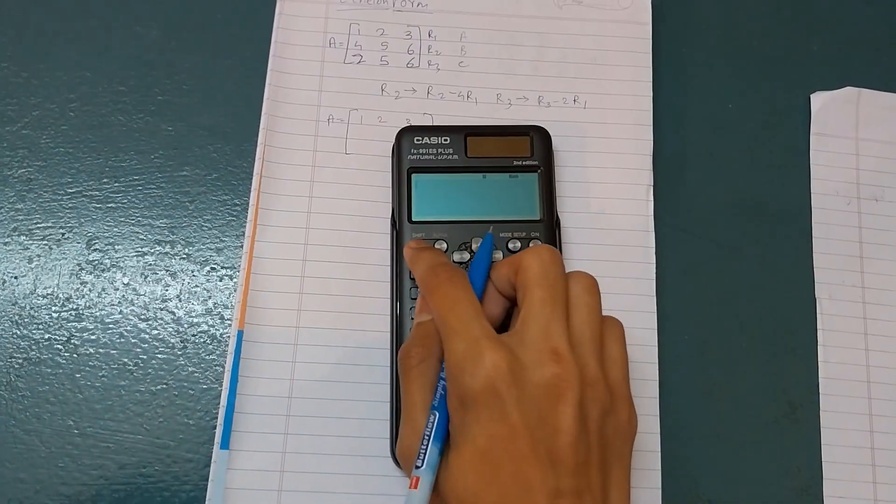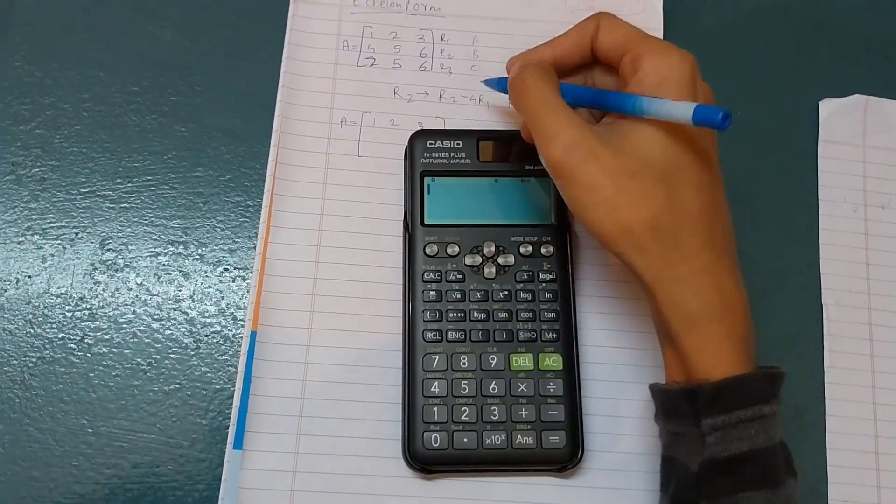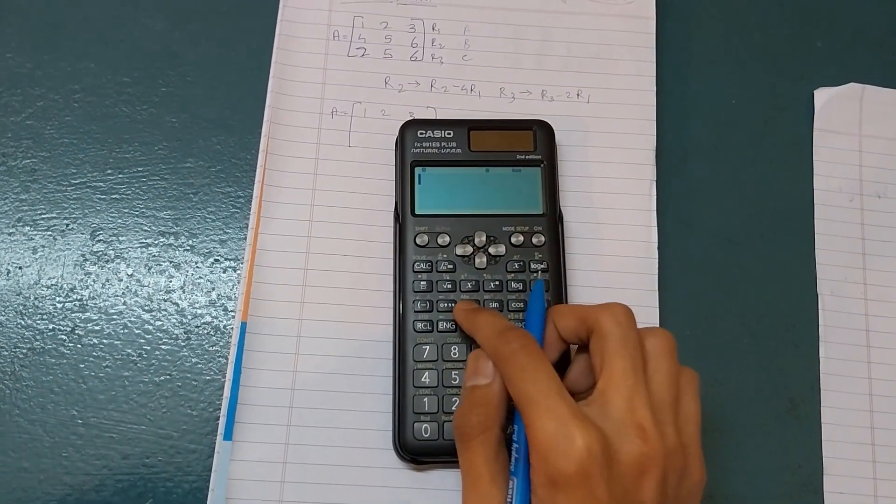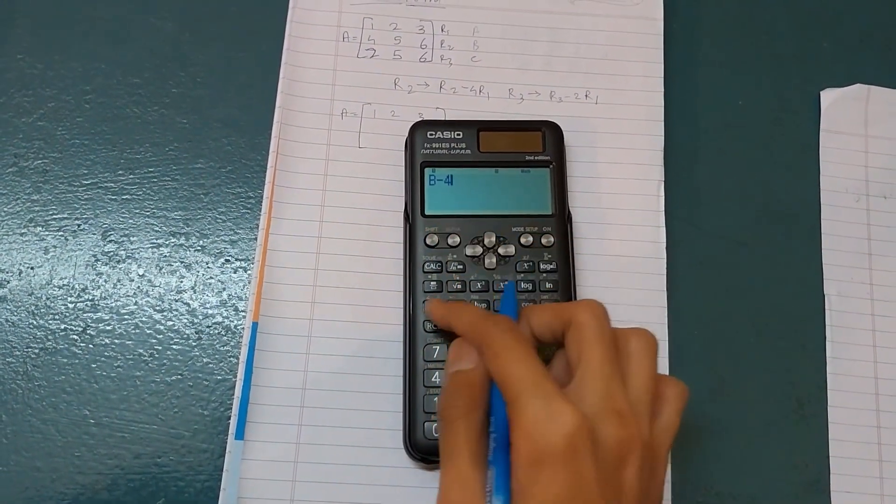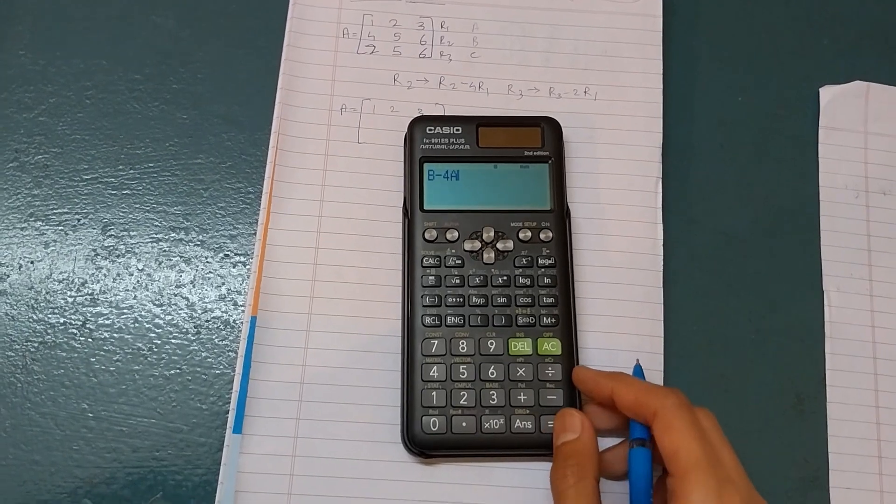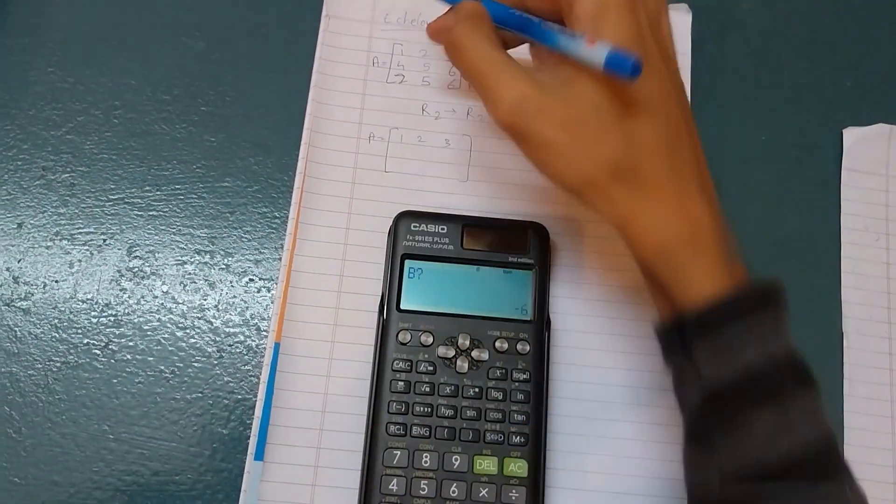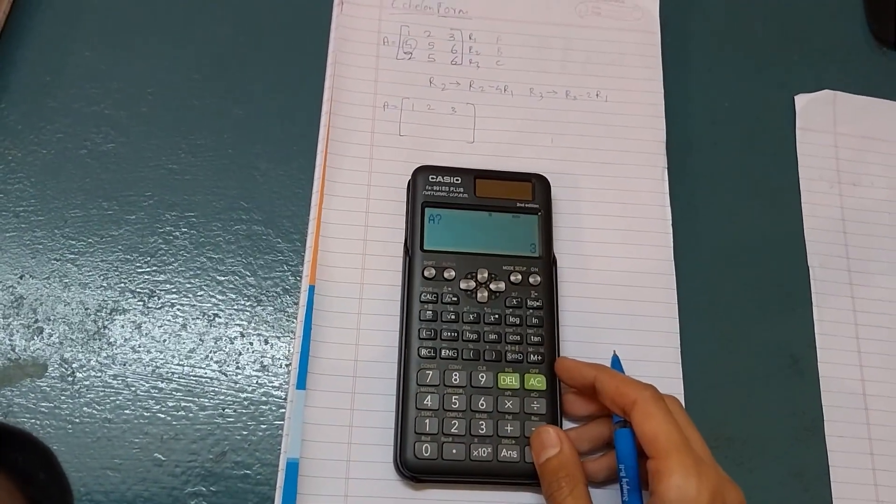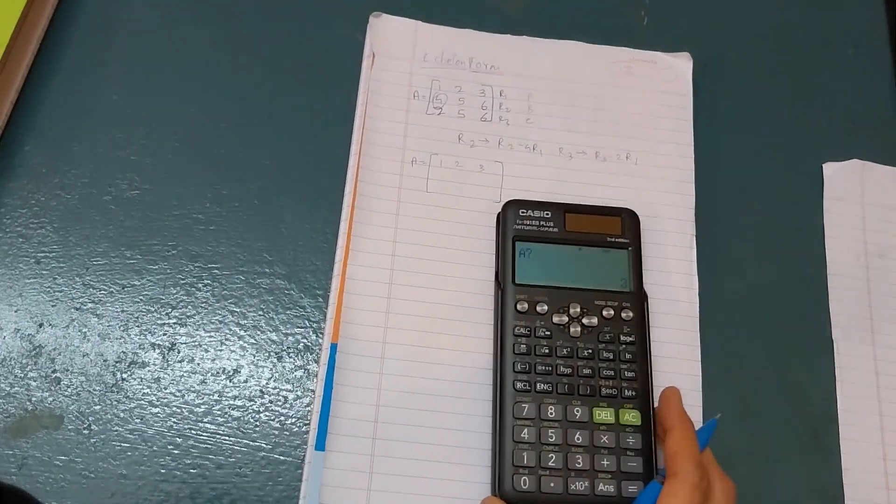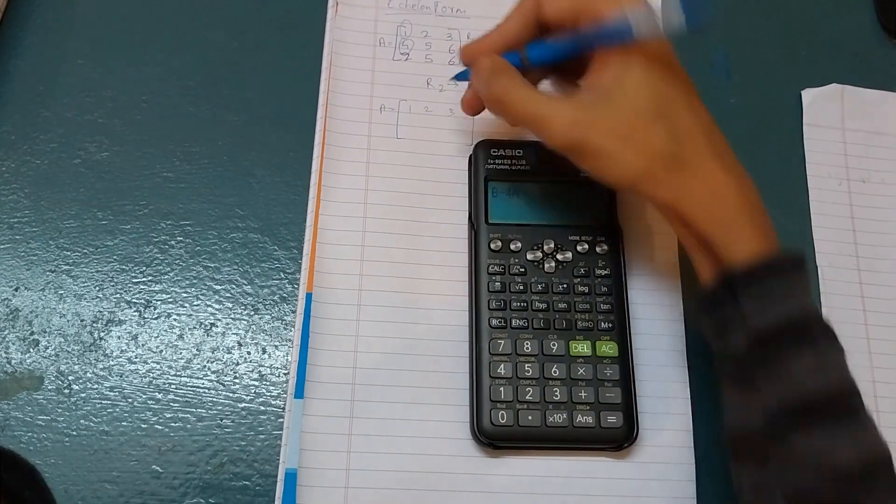I will turn this on. Now press alpha and write the equation: B minus 4 times A. Then press CAL. It will ask for B value. So the first B value is 4. Press equals. Then it will ask for A value. So A value is 1, and it will be 0.